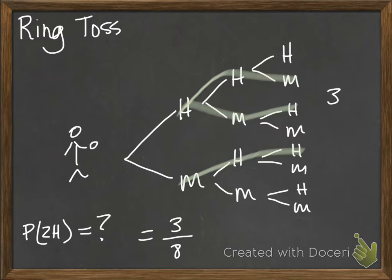That was a little complicated. We had to draw the tree, go through and count, or list out like HHH, HHHM, HMH, HMM — there's a lot of work.